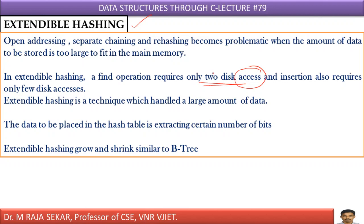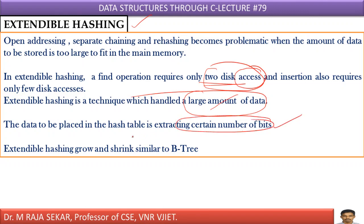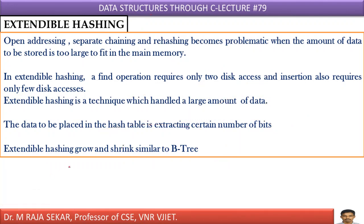This you can understand in a subject known as computer organization. Just understand that extendable hashing needs only two disk accesses. It is suitable to handle a large or huge amount of data. Even the data to be placed in the hash table is done by extracting certain number of bits. This hashing works based on B-trees. I already discussed B-trees in lecture number 65, 66, 67, so that you will get an idea on B-trees. This B-tree forms the basis for extendable hashing.